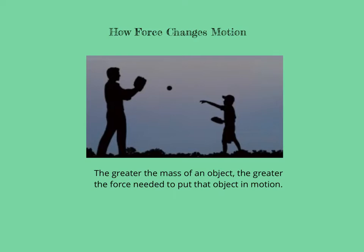The ball moves because of an unequal force, unlike the leash between the dog and woman that we saw in the last slide. The mass of the ball also affects its motion. A bowling ball and a baseball have different mass, so you would have to use more force to put the bowling ball in motion than a baseball.